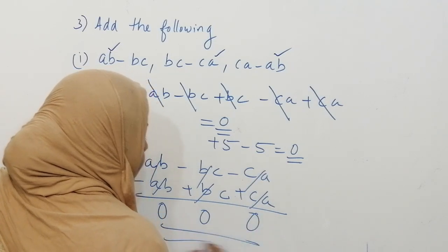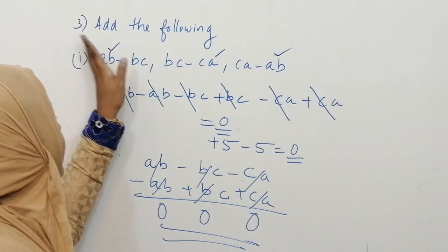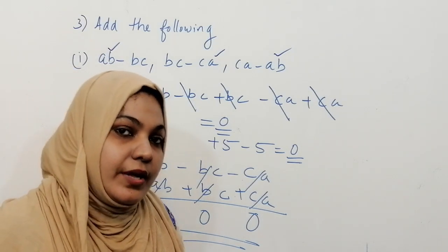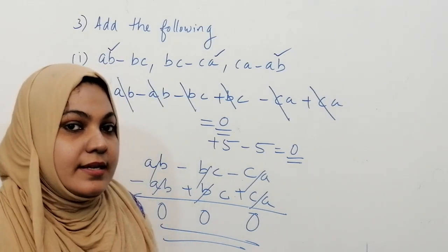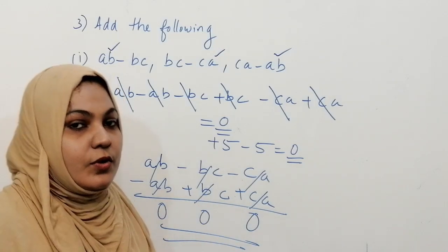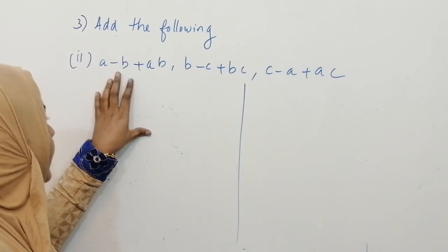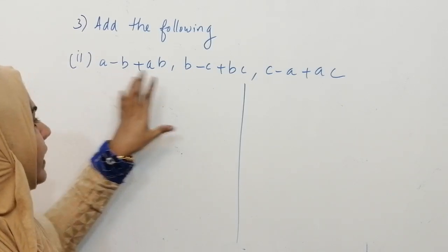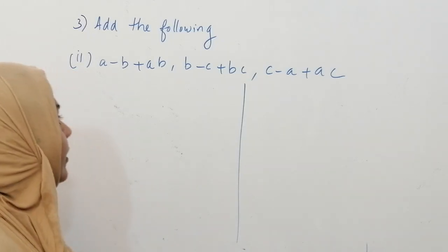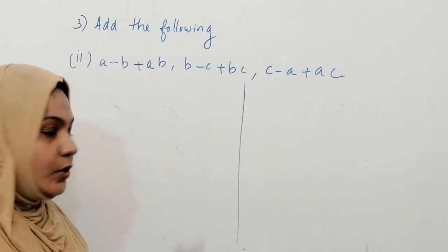I hope you understood the first part of question number 3. Remember: first combine the like terms, then add or subtract. Now let's do the second question of question number 3: (a minus b plus ab), (b minus c plus bc), and (c minus a plus ac). We can solve this in two ways. First, let's combine the like terms.